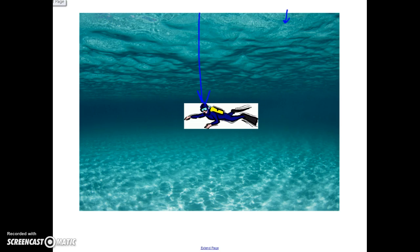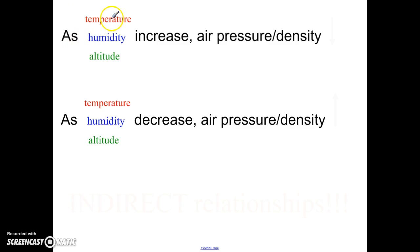So quick recap. If the temperature or the humidity or the altitude increases, the air pressure and the density is going to decrease. However, if the temperature goes down or the humidity goes down or the altitude goes down, then the pressure and the density will increase.